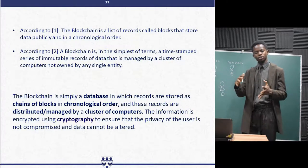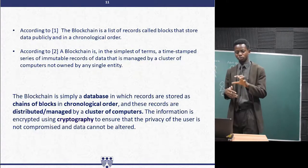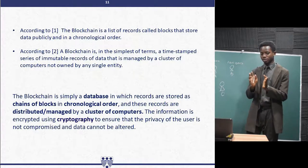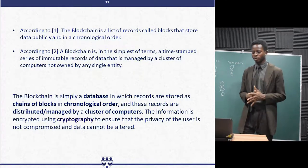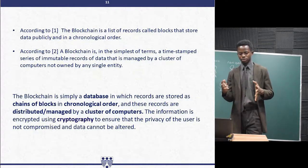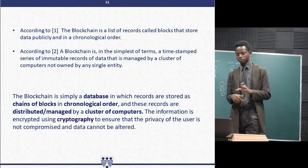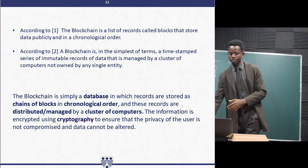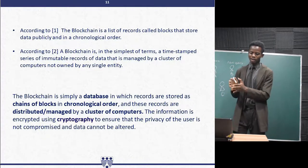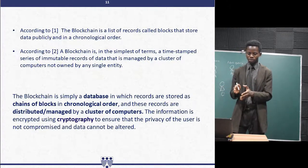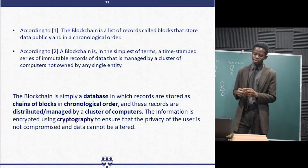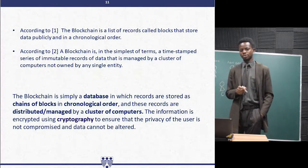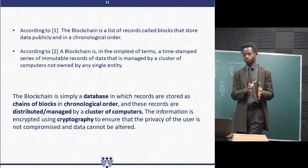I was able to pick these two definitions and add some other things to give you this definition. The blockchain is simply a database in which records are stored as chains of blocks in chronological order. And these records are distributed or managed by a cluster of computers. I believe you can see this definition on the screen. We're going to take it one after the other, paying attention to the highlighted words.